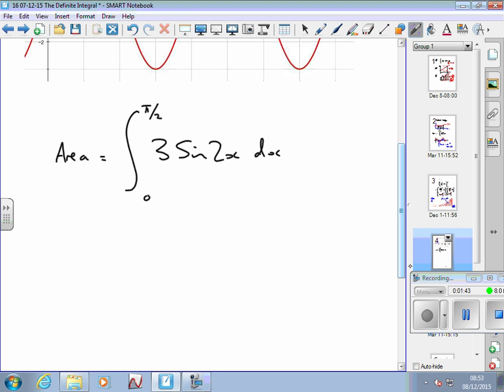So let's integrate it. So from our table of integrals, we can see that sine becomes minus cos, and the 2 comes out and goes underneath. So we get minus 3 over 2 cos 2x.